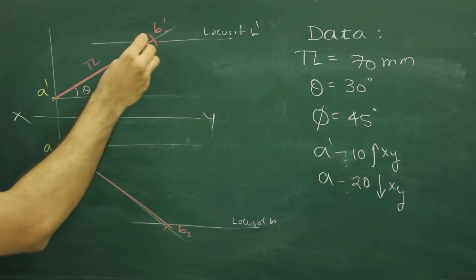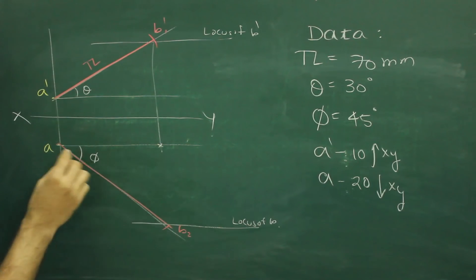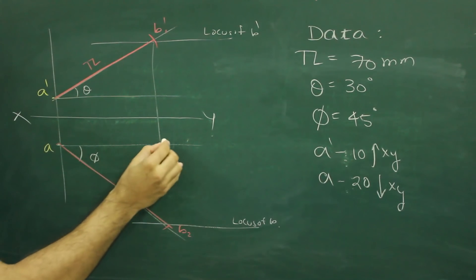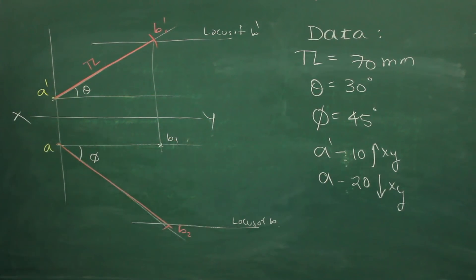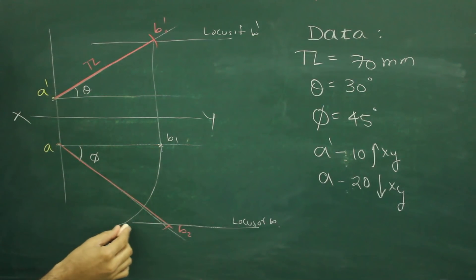After that we will project b1 dash straight down till it intersects with the horizontal line drawn from a, that would be b1. Keep point a fixed and from a to b, a to b1 will rotate wherever it will intersect with the locus of b, that point would be b.